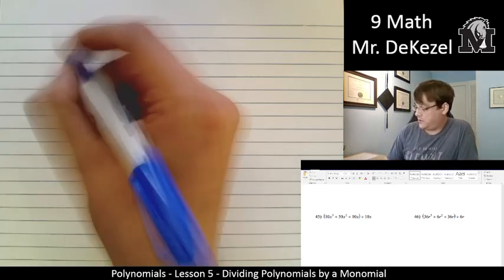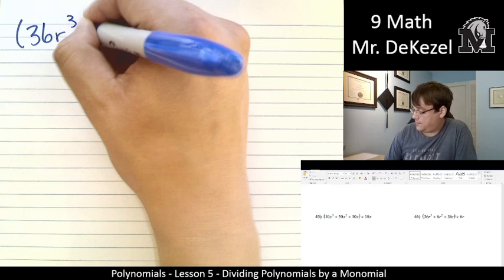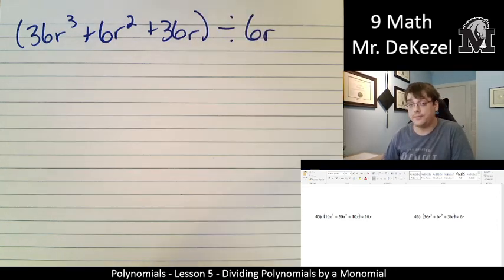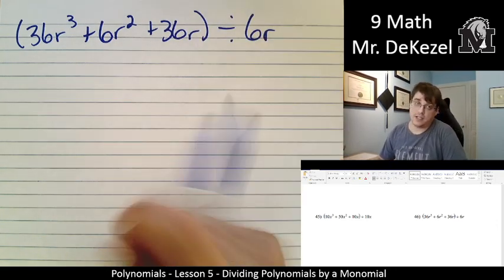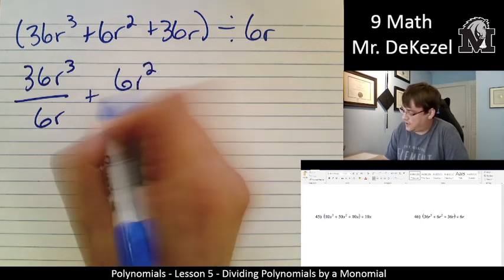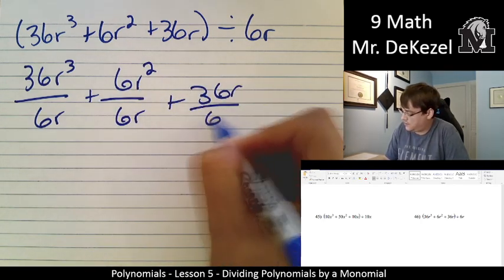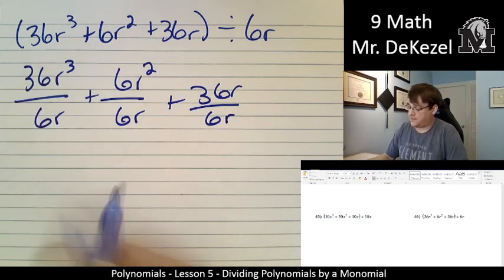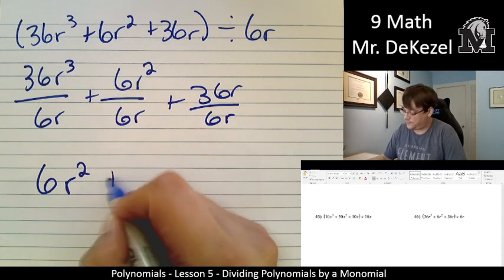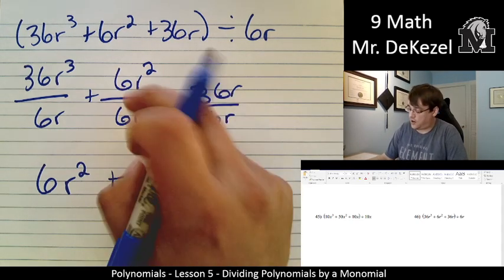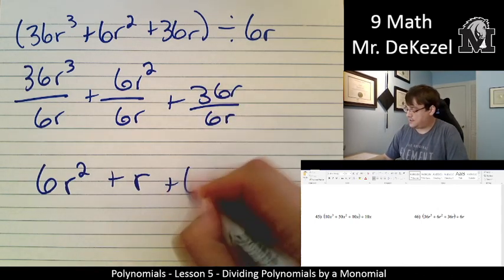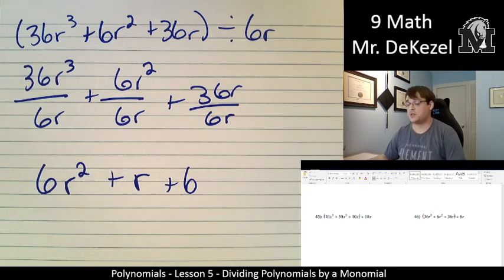We've got a couple more to do. 36r³ + 6r² + 36r, all divided by 6r. We can rewrite it with this underneath each particular term. So that's 36r³ divided by 6r plus 6r² divided by 6r plus 36r divided by 6r. 36 divided by 6 is 6r. 3 minus 1 leaves us with 2r². 6 divided by 6 is 1, so I don't have to write it. And then r² subtract 1. That's just r. And 36 divided by 6 is 6. And we have no more r's because 1 minus 1 is 0.